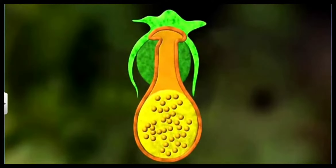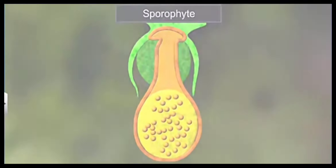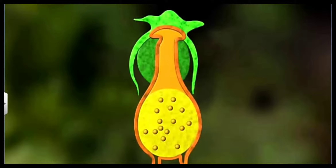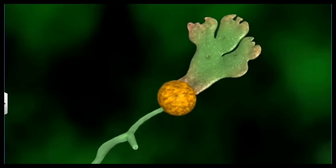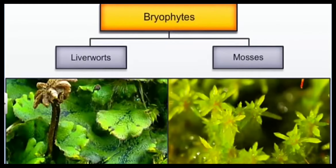This zygote grows into a sporophyte which is diploid. Some cells of the sporophyte undergo meiosis and produce small spores. These spores, when they germinate, develop into the gametophyte again. This is how the life cycle is completed. Bryophytes are further divided into liverworts and mosses.